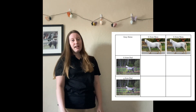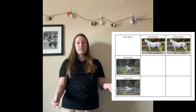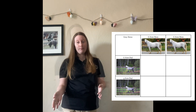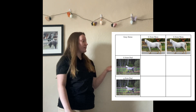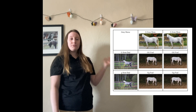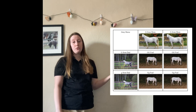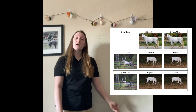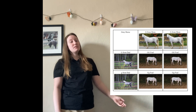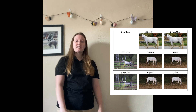Now the example I have for gray is the same idea — take this time to do it on your own, and I'll show it at the end. So here you have it: a 50% chance of the foal being homozygous dominant and a 50% chance of the foal being heterozygous.